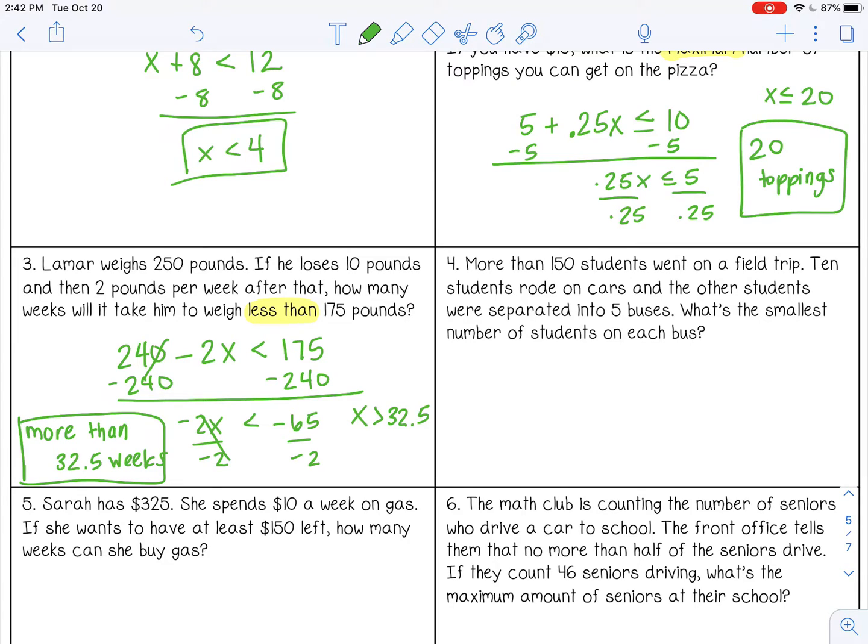Number four. More than, I already see my key phrase, more than 150 students went on a field trip. 10 students rode on cars, and the other students were separated into buses. What's the smallest number of students on each bus? So we know that it's going to be more than 150 students. 10 rode in cars, and then we have 5 buses with kids. So we want to know how many kids are on each bus. So x is the number of students on each bus. So plus 5x, that's the number of students.